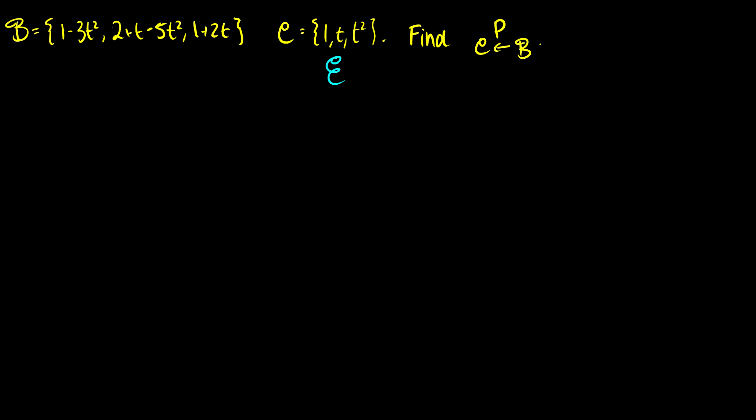So again, we want to set up. So we have C on the left and B on the right. So C is going to look like 1, 0, 0, because that's what the 1 represents. The t represents the vector of 0, 1, 0. T squared is 0, 0, 1.